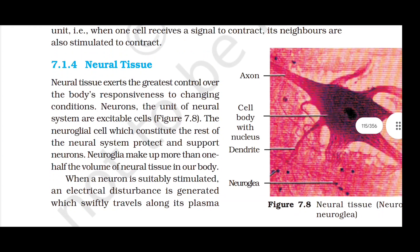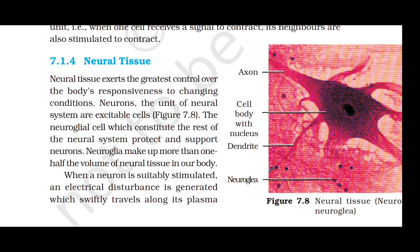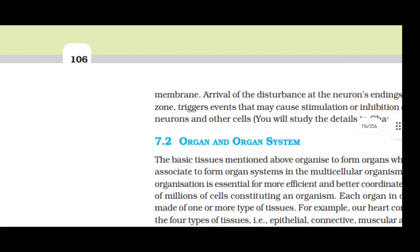Neural tissue exerts the greatest control over the body's responsiveness to changing conditions. Neurons, the unit of the neural system, are excitable cells. Neuroglia make up more than half the volume of neural tissue in our body. When a neuron is suitably stimulated, an electrical disturbance travels along its plasma membrane and triggers stimulation or inhibition of adjacent neurons and other cells.